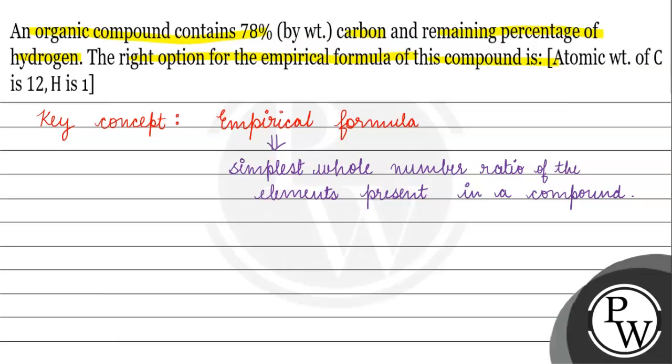Just say, suppose our compound A2B4. Now, simplest whole number ratio is not because A to B to ratio. Now, what is 2 to 4? We can reduce 1 to 2. If we write AB2, then what will we say? This is empirical formula. To simplest whole number ratio of the elements of a compound, that is empirical formula.